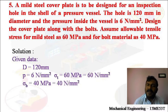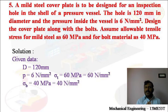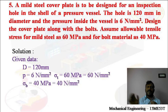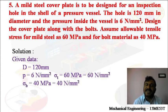First, I am going to take the design of bolts. Record all the given data. The hole is 120 mm in diameter, that is D = 120 mm. Pressure inside the vessel is P = 6 N per mm square. Tensile stress for mild steel — because the cover plate is made of mild steel — is σT = 60 MPa. And for bolt material, σB = 40 MPa. 1 MPa equals 1 N per mm square.